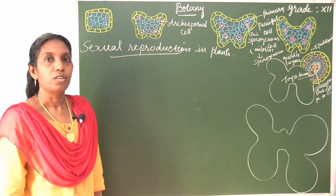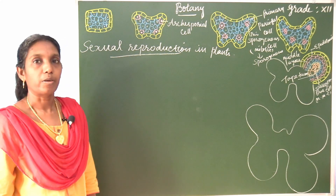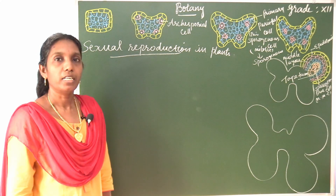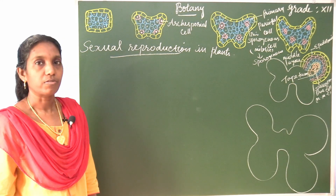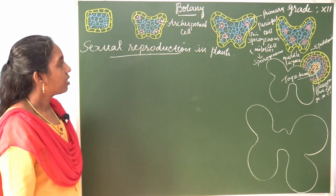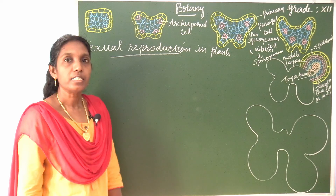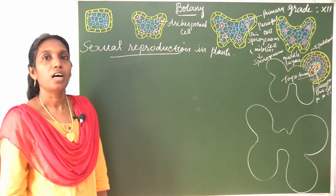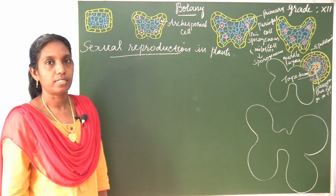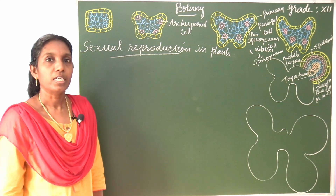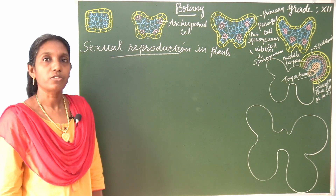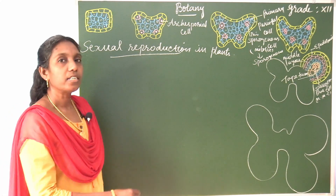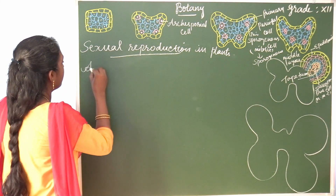Earlier, you learned about asexual reproduction with several examples, mainly in the lower forms like algae as well as bryophytes. Let us start this class with sexual reproduction in higher plants. Before that, let us see how sexual reproduction takes place in algae and bryophytes.